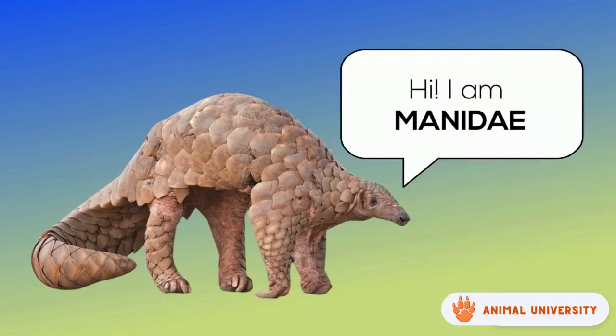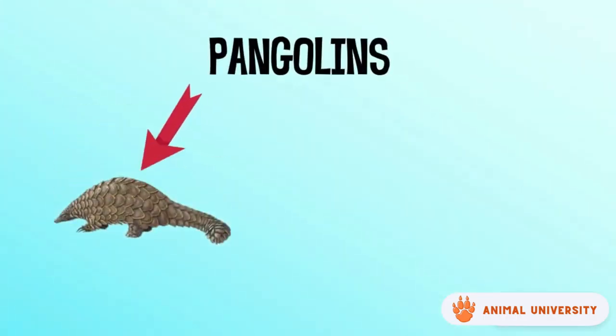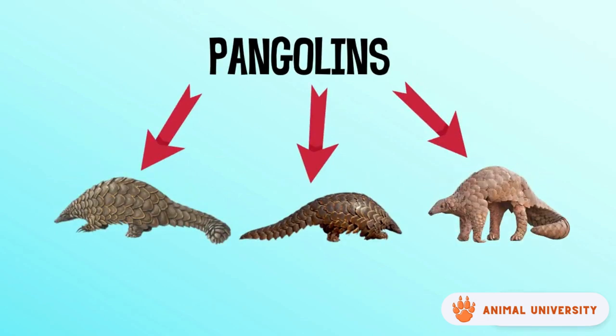Pangolins are also known as scaly anteaters. They are divided into three genera: Asiatic pangolins, African tree pangolins, and lastly African ground pangolins. They are the only surviving family in the order of Pholidota, which is closely related to carnivores.